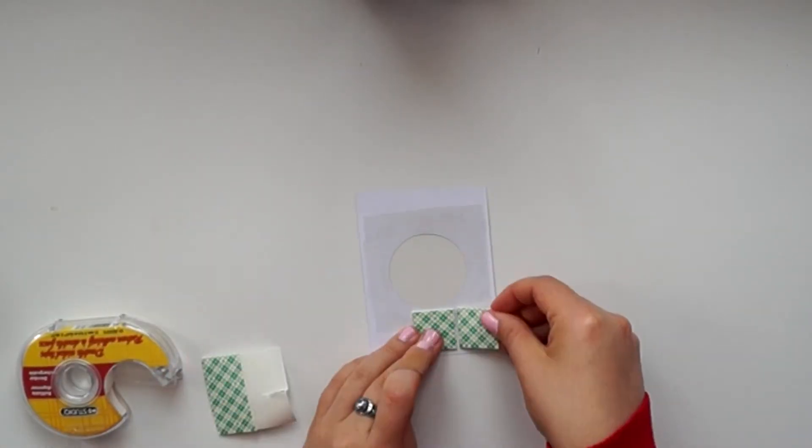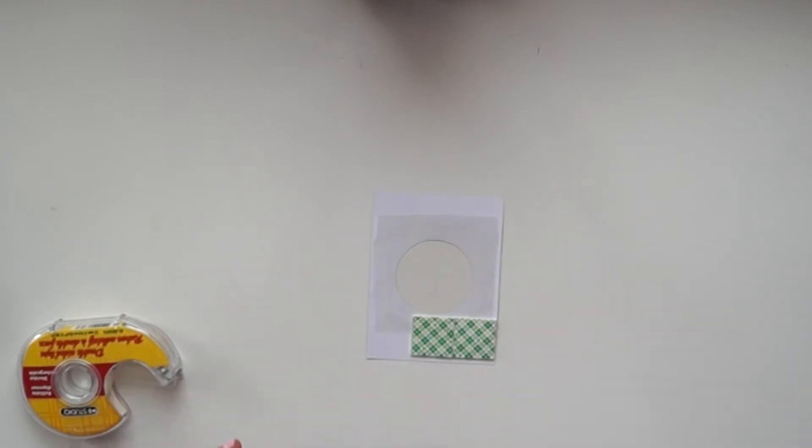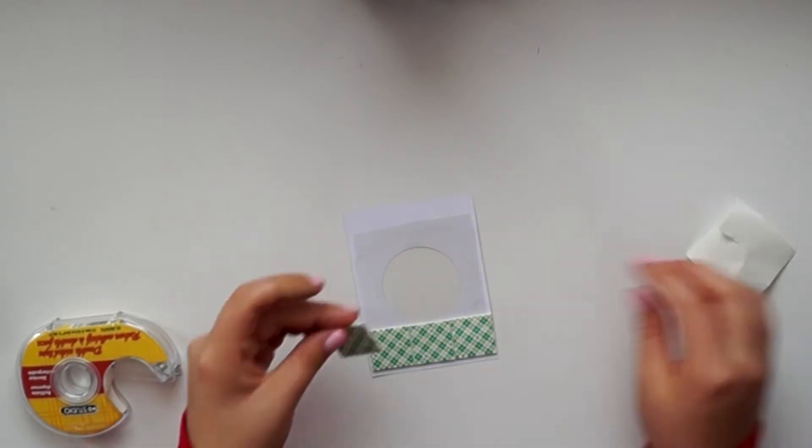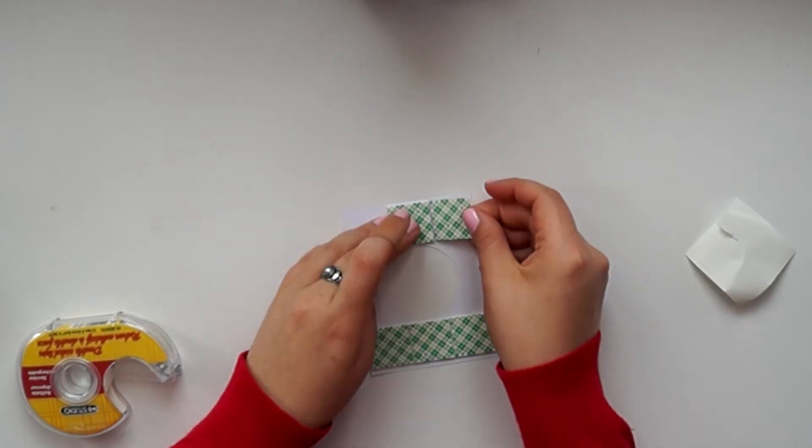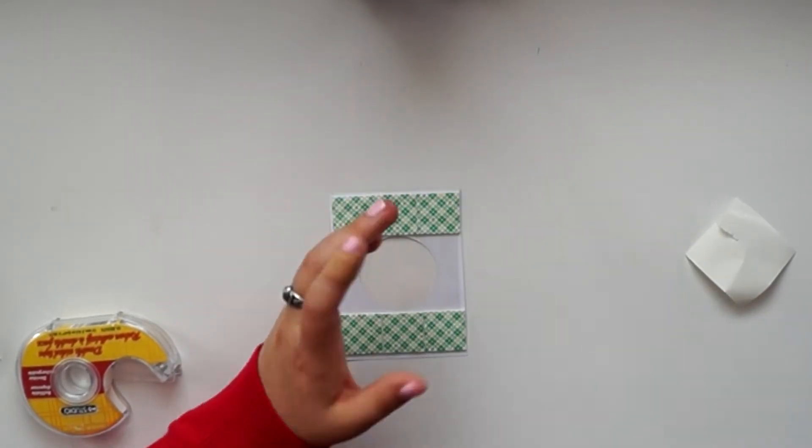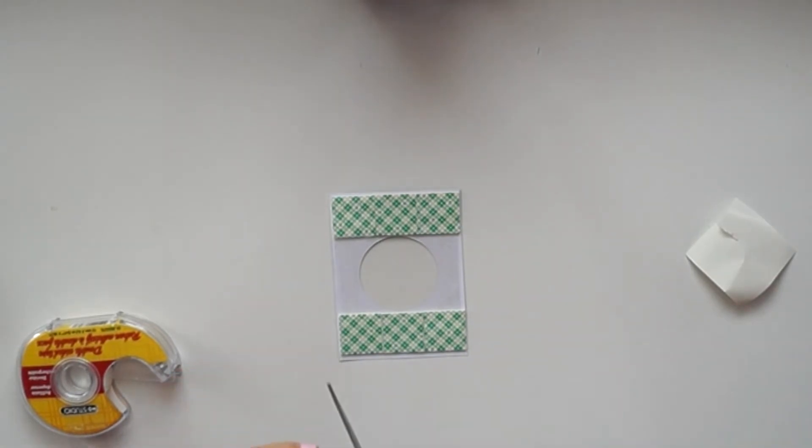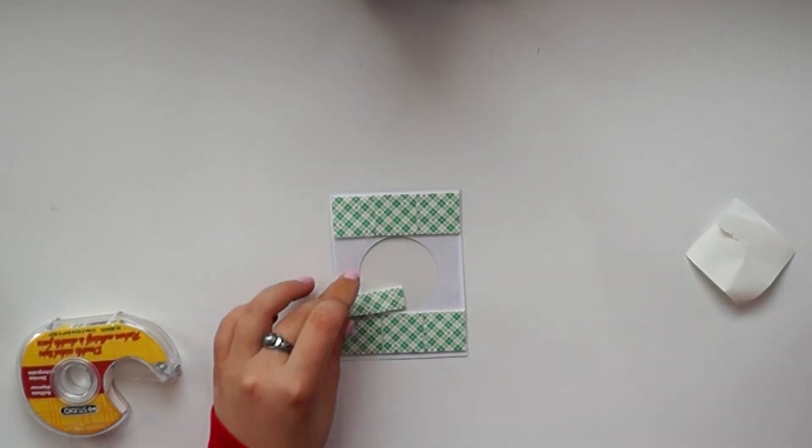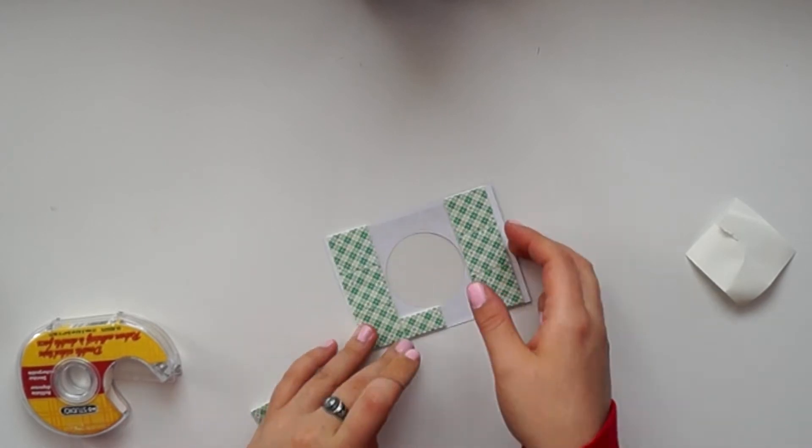Next, we're going to add some foam tape all around the opening of our shaker card. We want to make sure that all the sequins stay within the area that we want them to be seen, but you also want to have enough foam tape all around your card.